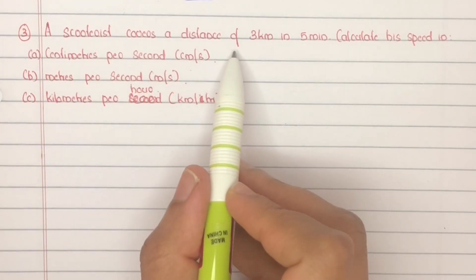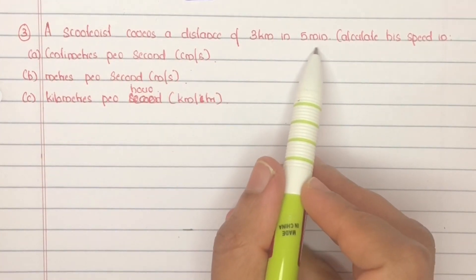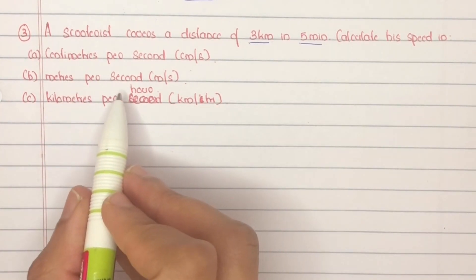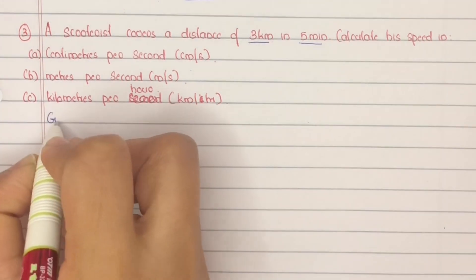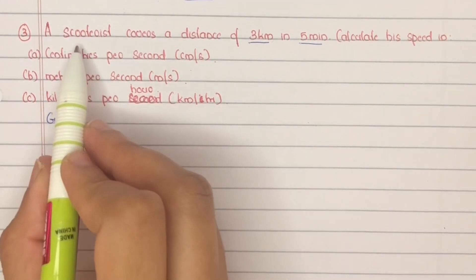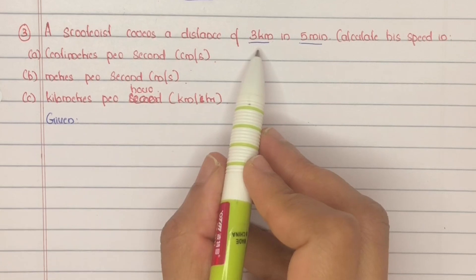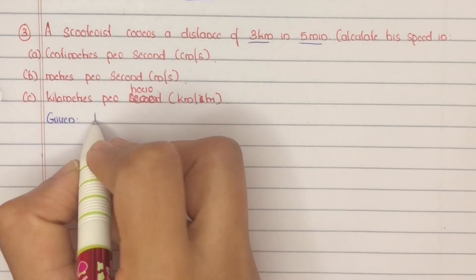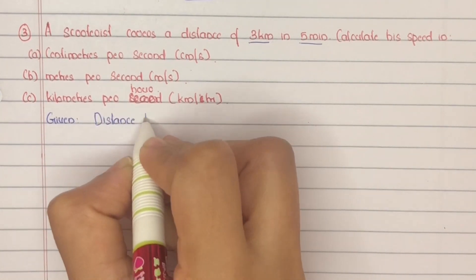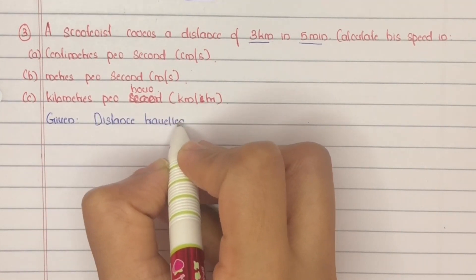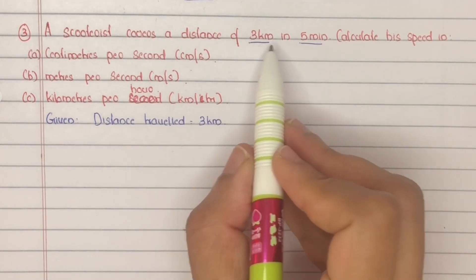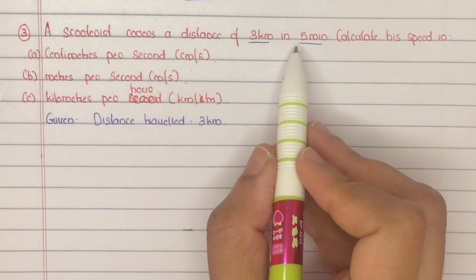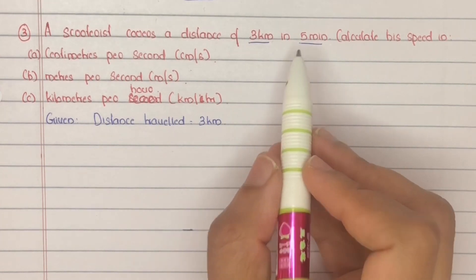A scooter covers a distance of 3 kilometers in 5 minutes. Calculate its speed in centimeters per second, meters per second, and kilometers per hour. Given: distance traveled is equal to 3 kilometers, and time taken to travel that distance is 5 minutes.